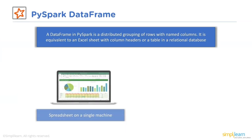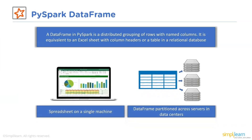The data frame in PySpark is a distributed grouping of rows with named columns. In simpler terms, it is equivalent to an Excel sheet with column headers or a table in a relational database. The spreadsheet is on a single machine, whereas its data frame is partitioned across servers in data centers. It also has features in common with RDD, such as being immutable — we can only build a data frame or RDD once without being able to edit it. Furthermore, RDD and data frame are both distributed in nature. Large collections of organized or semi-structured data can be processed using data frames. Petabytes of data can be handled using data frame in Apache Spark, and it supports a variety of data formats and sources, with API support for Python, R, Scala and Java.